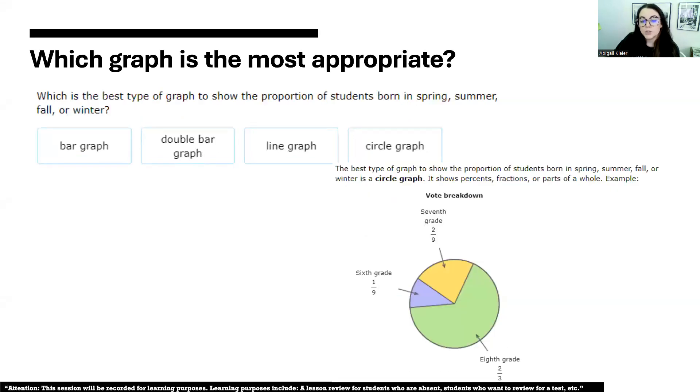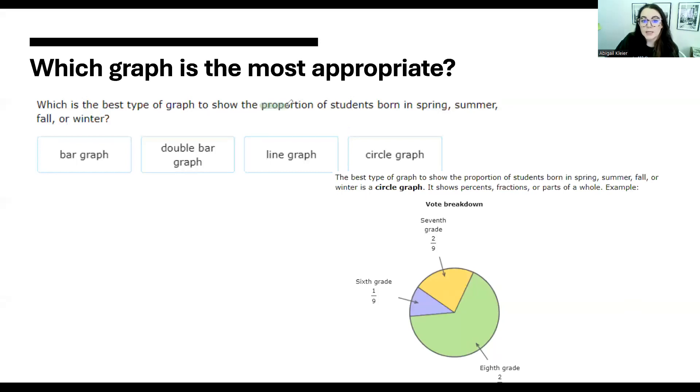Which is the best type of graph to show the proportion of students born in spring, summer, fall, or winter? We look for keywords as always in this scenario. The keyword here is proportion. Anytime we see something like proportion or percentage or out of 100, all of those things indicate to us that we are dealing with circle graphs. Just like we talked about in 7.01, circle graphs is a proportional relationship out of 100. So anytime we see proportion or percentage, we are going to choose circle graph as our most appropriate data representation.